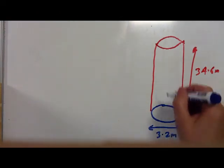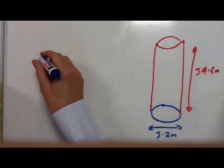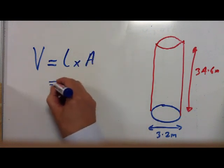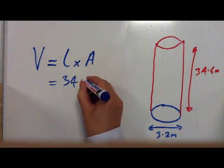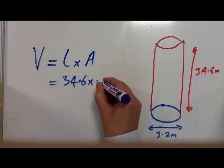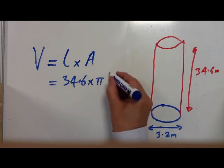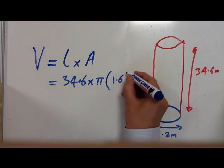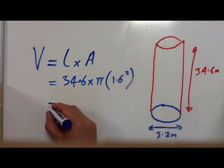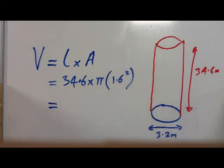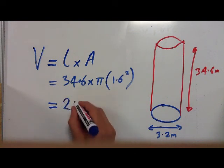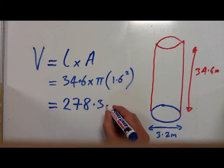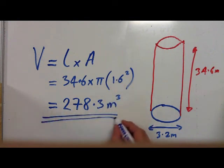All we need to do is work out the volume of this cylinder. The volume of a cylinder V equals length times cross-sectional area. The length is 34.6 metres, and the area is pi R squared where R equals half of 3.2, which is 1.6. So the area is pi times 1.6 squared. This gives us a total volume of 278.3 metres cubed — that's the total volume of water hitting the turbine in one second.